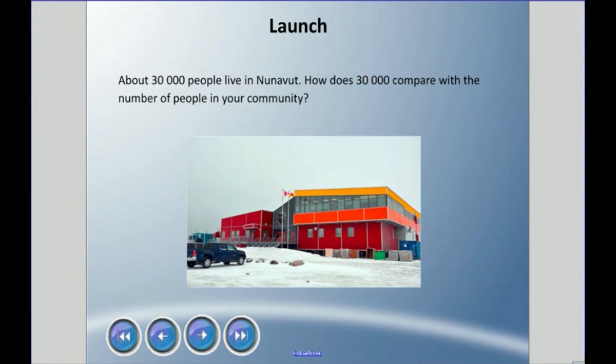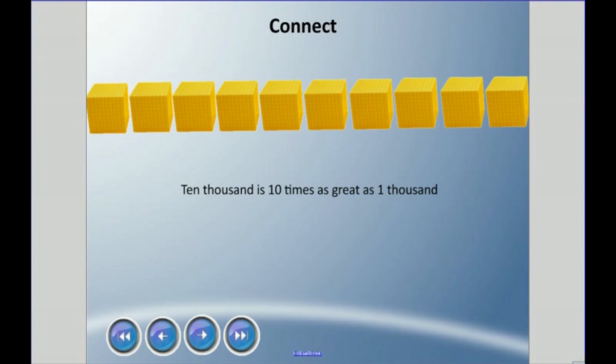Hello and welcome to the first lesson in this new unit called Whole Numbers. We're going to be looking at numbers and place value, and how we can use models or pictures to represent numbers. To get us started, there's about 30,000 people living in the territory of Nunavut in Canada. How does 30,000 compare with the number of people in your community? Let's get the lesson going—we're going to talk about bigger numbers.